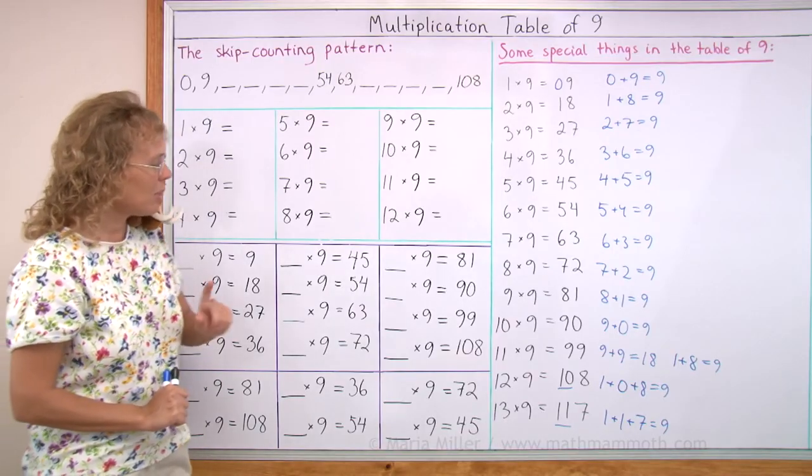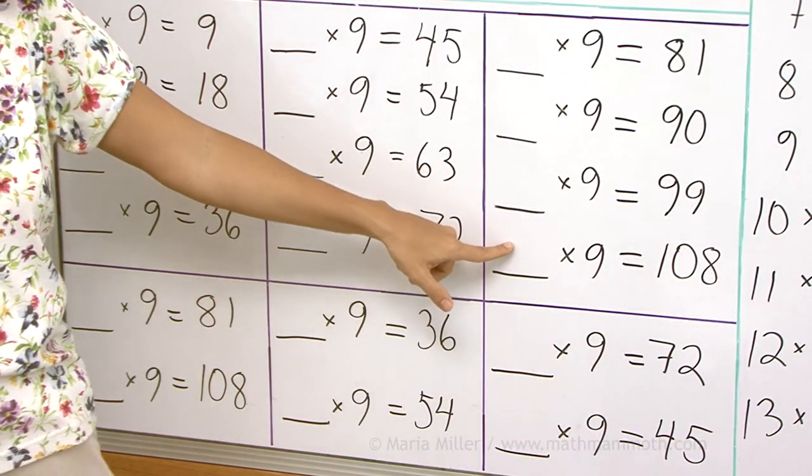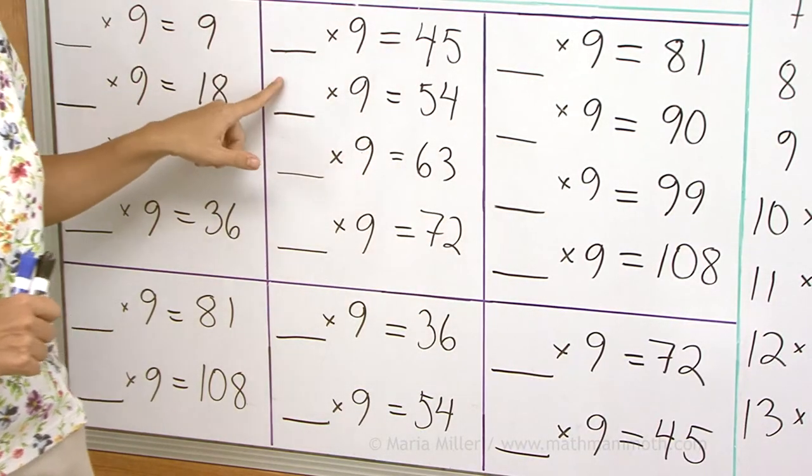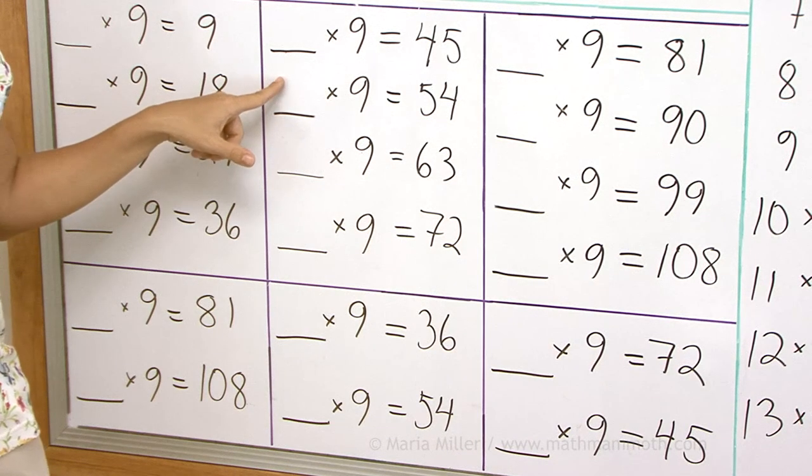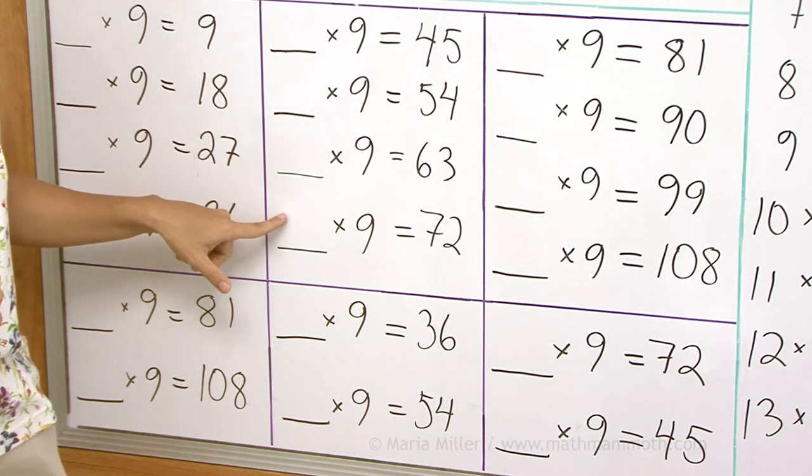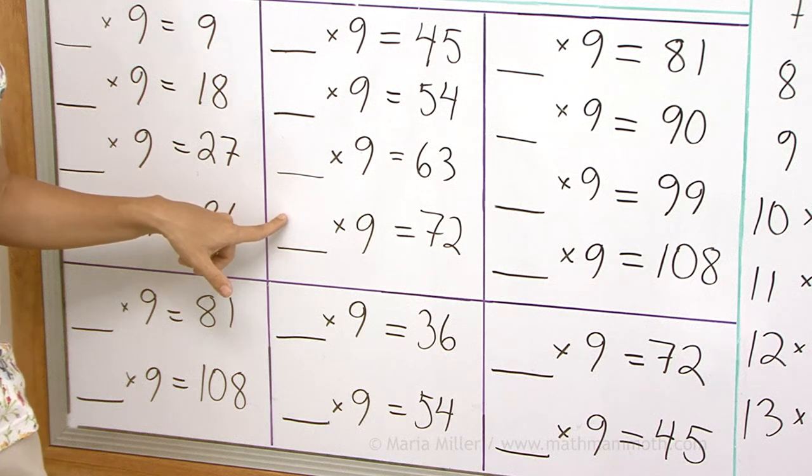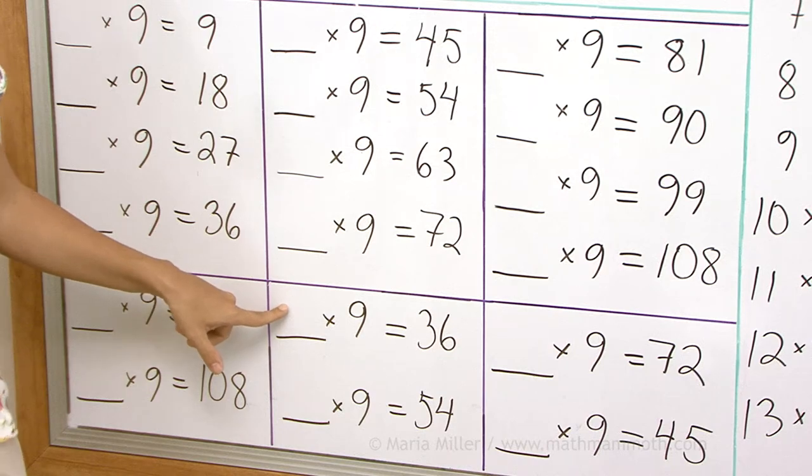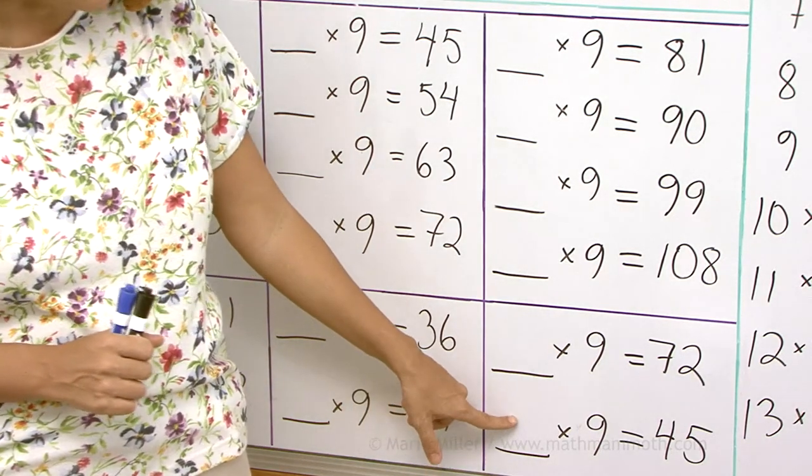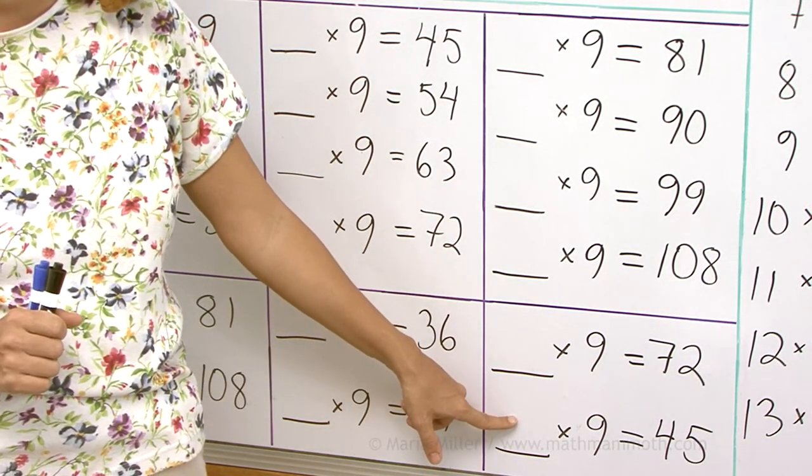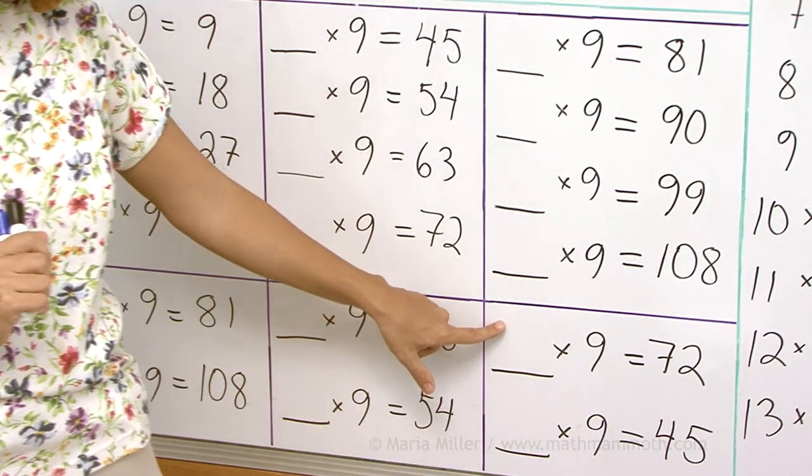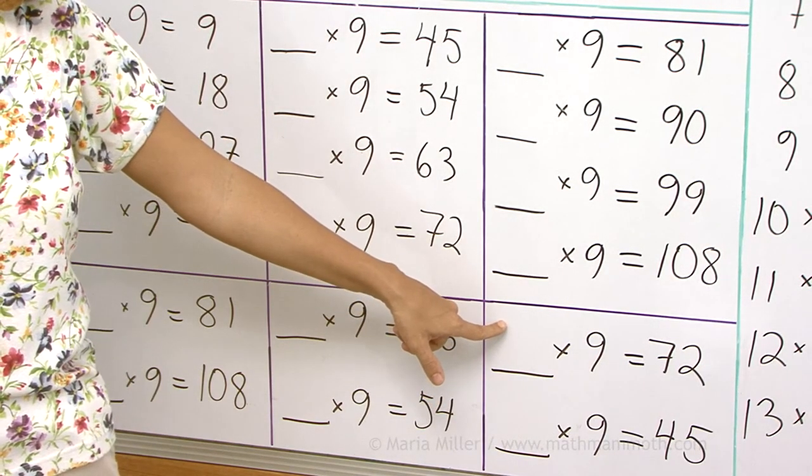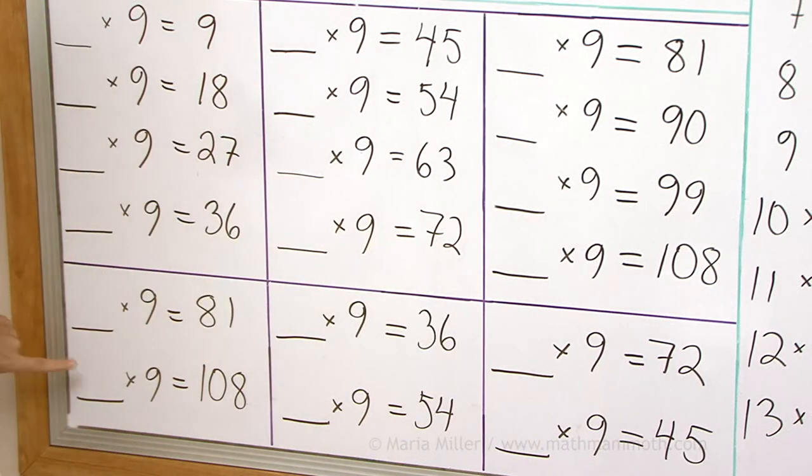Let's practice now. How many times 9 is 108? Well, 12 times. How many times 9 is 54? 6. How many times 9 is 72? 8. How many times 9 is 36? 4. And how many times 9 is 45? 5 times. And how many times 9 is 72? 8 times. And this one? 12. I won't tell you the answers anymore. Just go on.